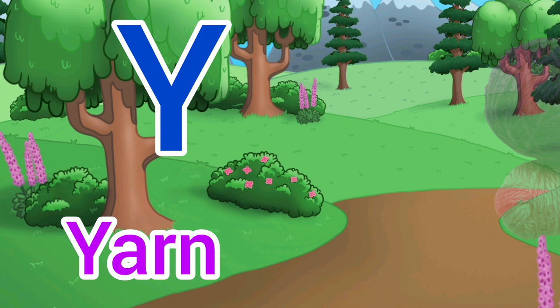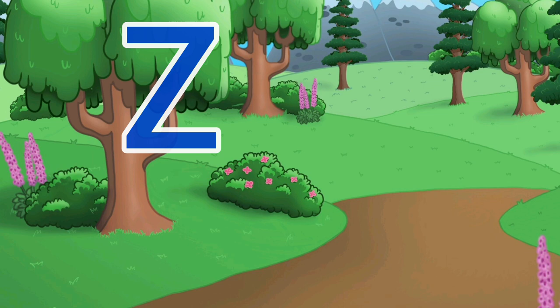Y for Yarn. Yarn means bhaga. Z for Zebra. Zebra means chitidhar ghosla.